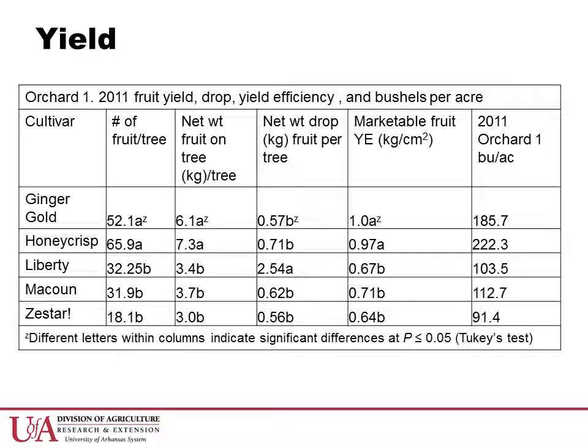Fruit yield in 2011 was low by commercial standards for an orchard of this age. Ginger Gold and Honeycrisp had the highest yield in number of fruit, kilograms of marketable yield, and marketable yield efficiency. Yield efficiency is calculated by dividing the weight of the crop by the trunk cross-sectional area of each tree, to standardize yield measurements across trees of different size.